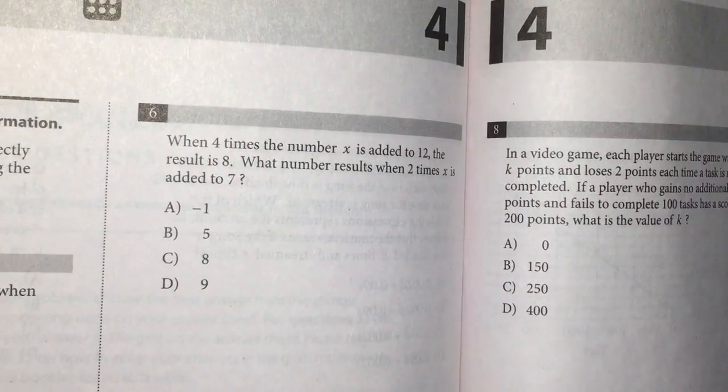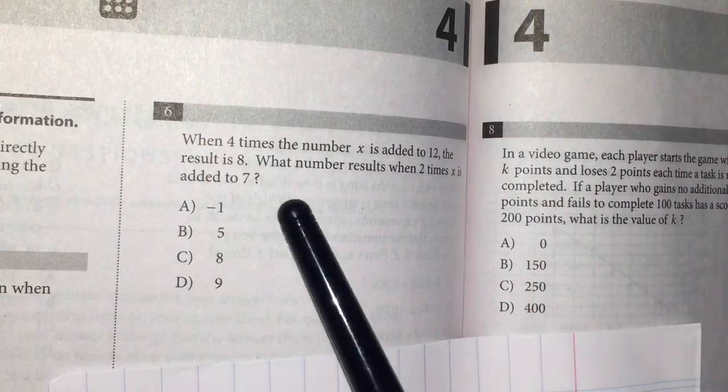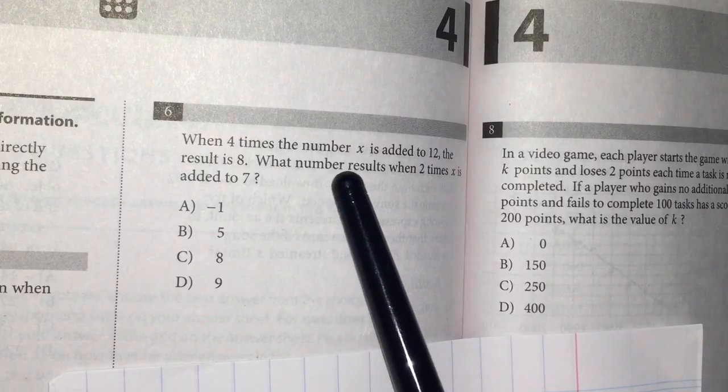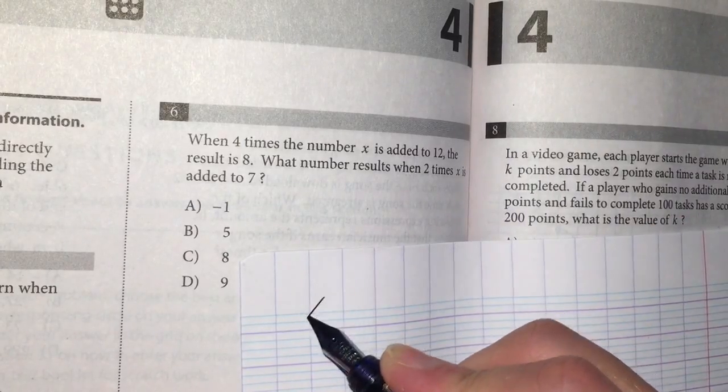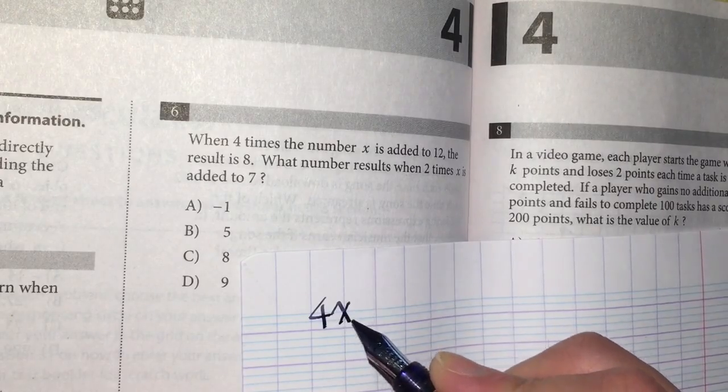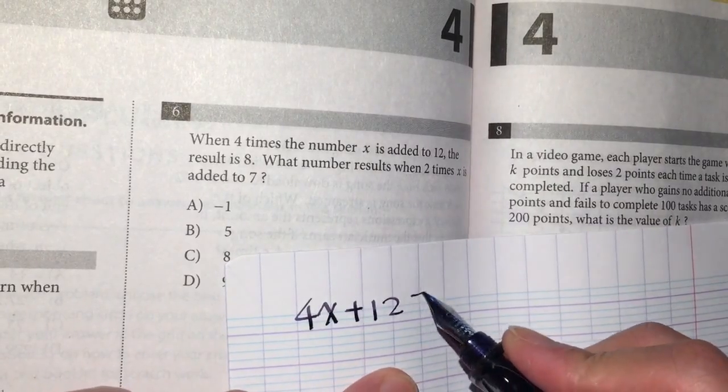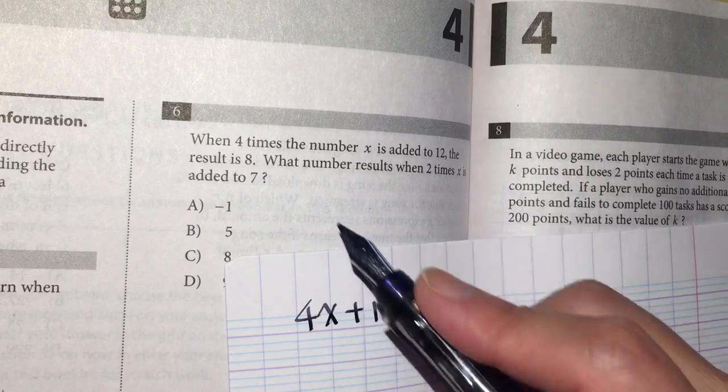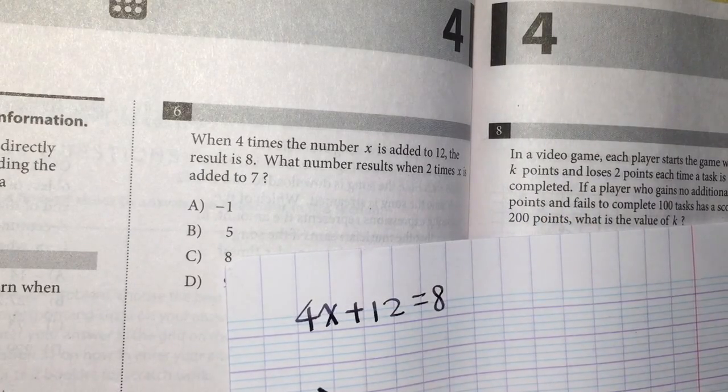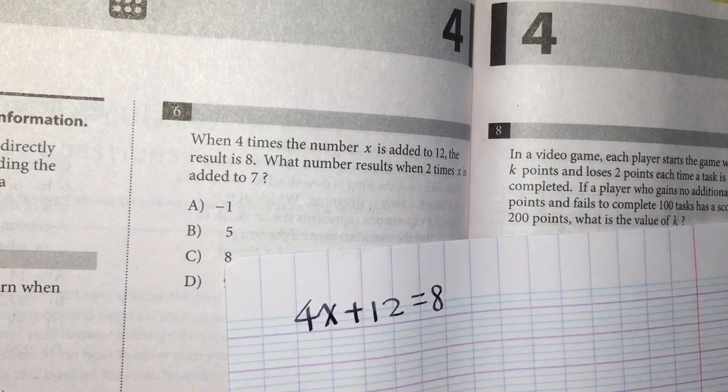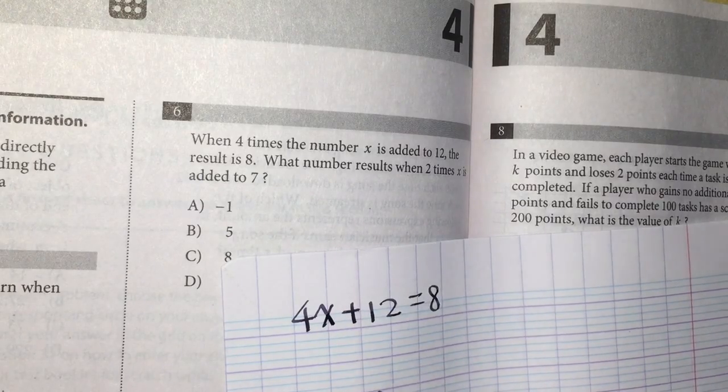Anyway, this one is a pure word problem. It is a pure language problem. When 4 times the number x is added to 12, the result is 8. 4 times the number x is added to what? To 12. The result is 8. Okay? So what number result when 2 times x is added to 7. So what you want to know is 2 times x is added to 7. This is what you want to know.